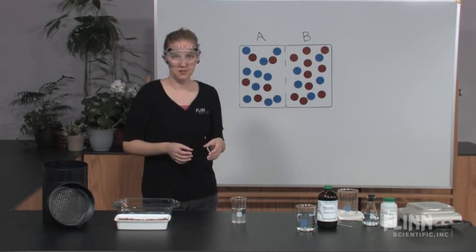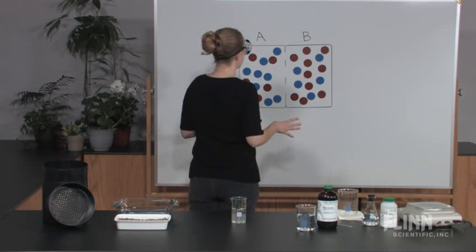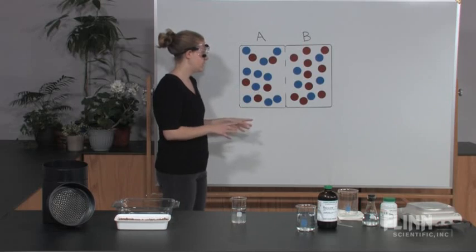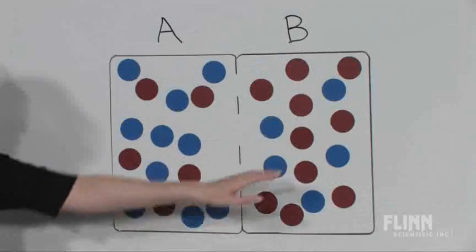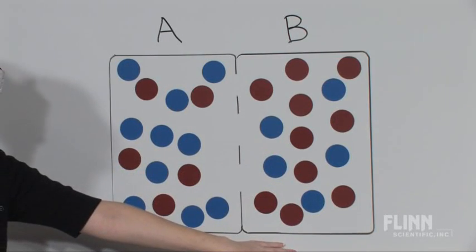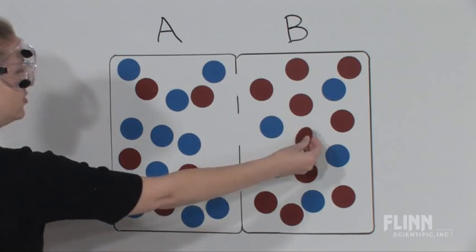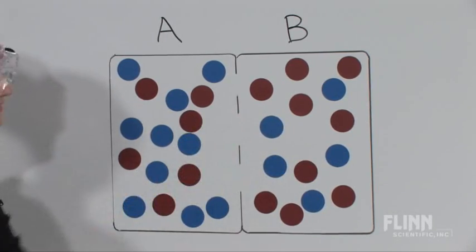Diffusion is the net movement of a molecular ion from a region where it is highly concentrated to a region where it's less concentrated. So here the red magnets represent solute. They're more concentrated on side B, so they will tend to move towards side A where they're less concentrated.